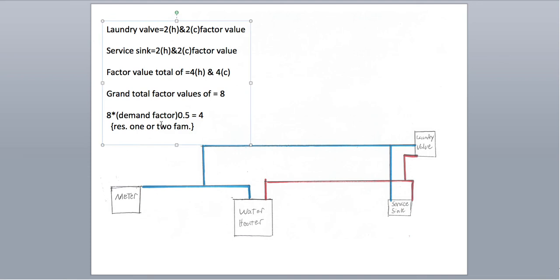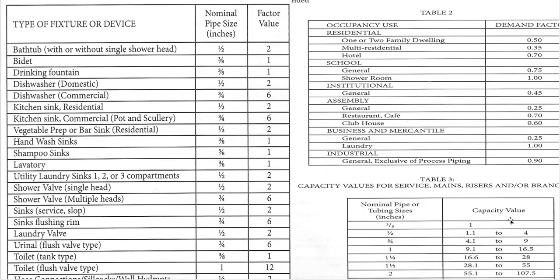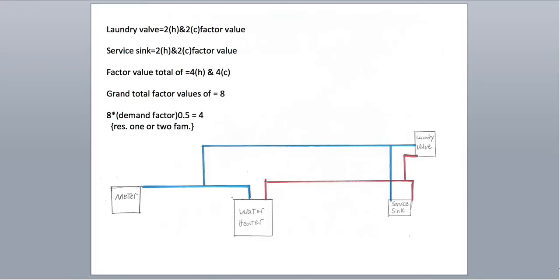Now you take that four and go back to the capacity values — 1.1 to four is half-inch. Three-eighths is too small, obviously. But keep in mind your smallest water main is three-quarter inch. This right here is just a branch, just a section of your water pipe — that's just for example. But if you had a whole house, you just go around. If you take it by section it's a lot easier. Do your sections, then follow your branches and risers and break it down that way. If you take your time, it's just as simple as doing this.